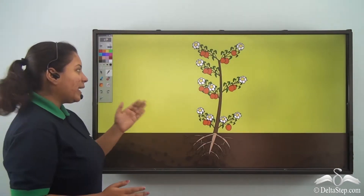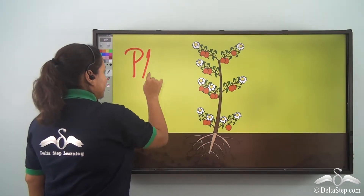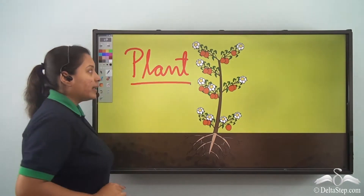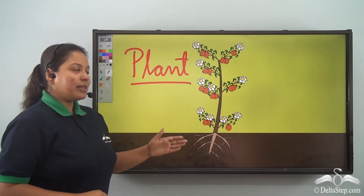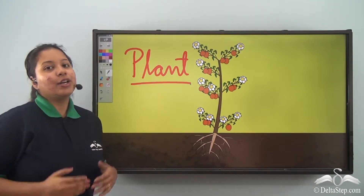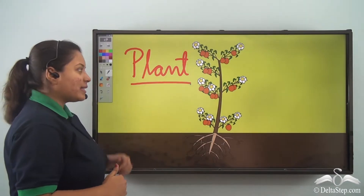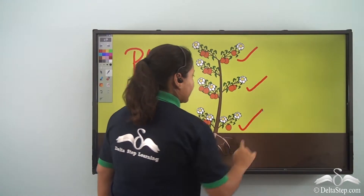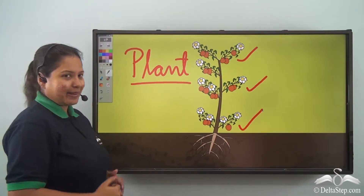Here we have got a magical plant. This plant is singing for us: "I am a plant, beautiful and tall. I have many parts — you got to know them all." It has got different body parts and you need to know all of them. Let's begin.